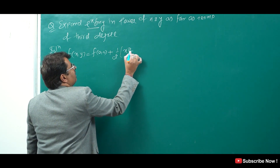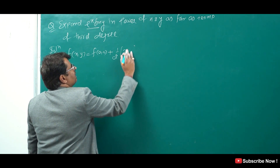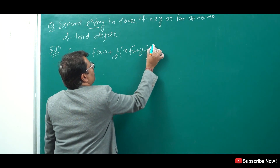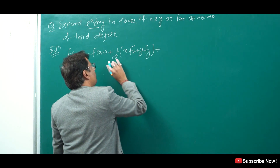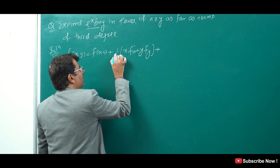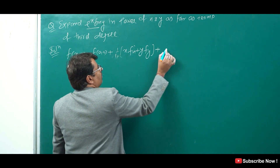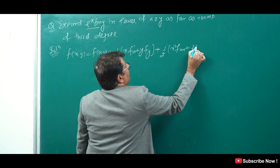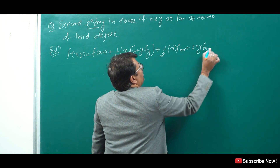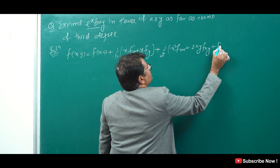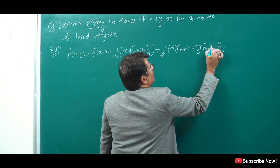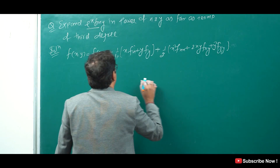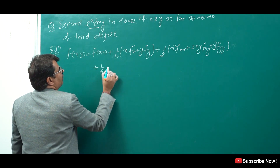f(x, y) is equal to f(0,0), plus 1 by 1 factorial: x fx plus y fy, plus 1 by 2 factorial: x square fxx plus 2xy fxy plus y square fyy. Plus 1 by 3 factorial: terms for x cube, x square y, x y square, and y cube with corresponding partial derivatives.